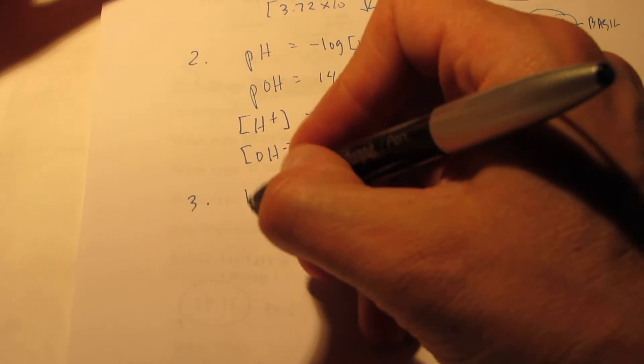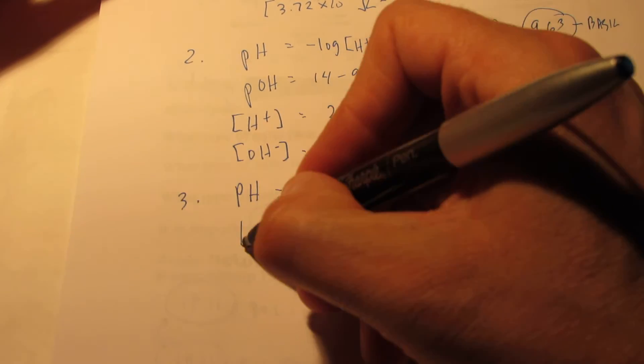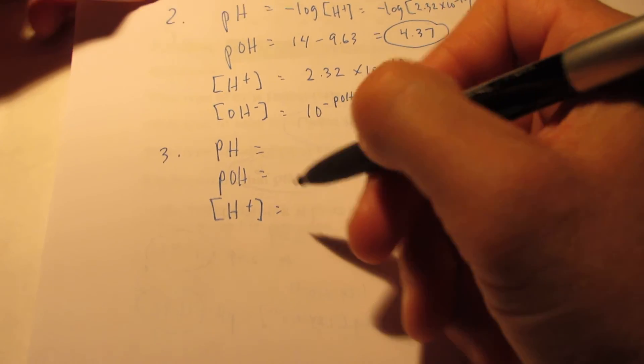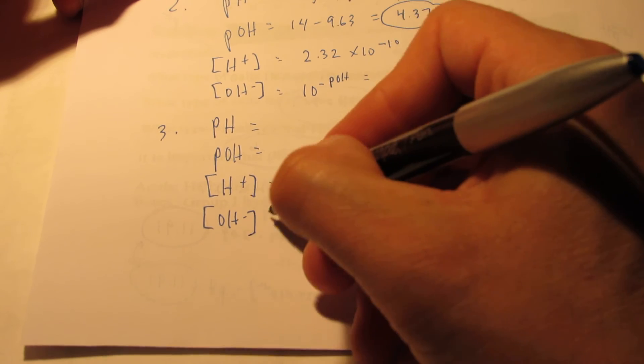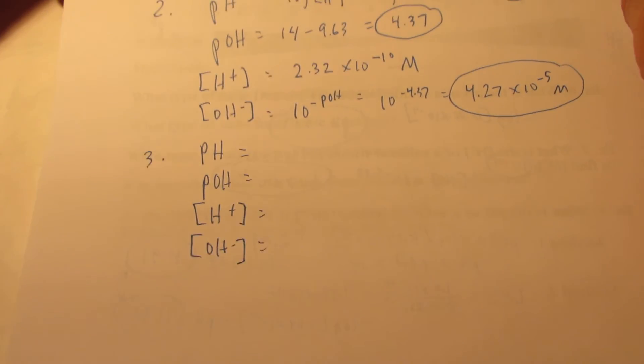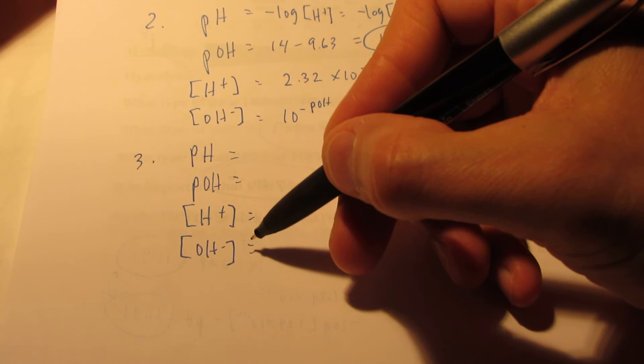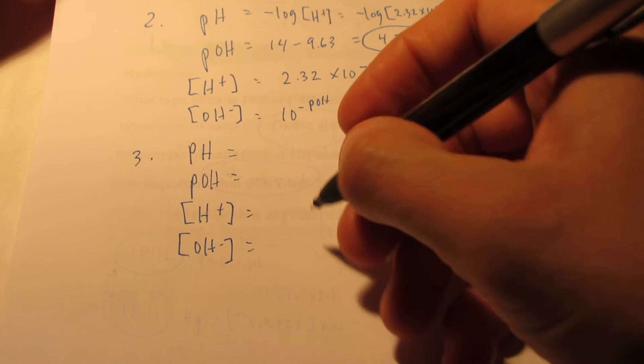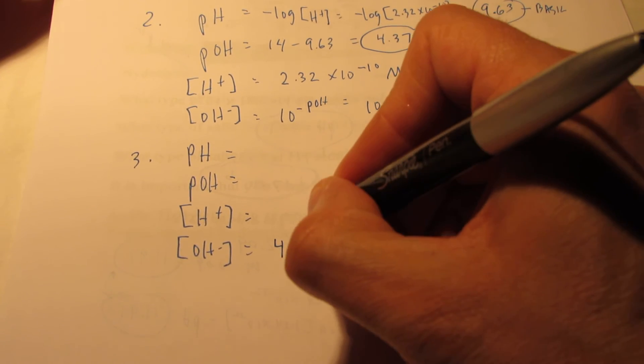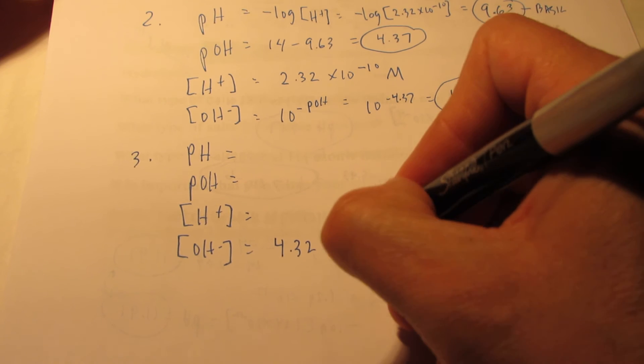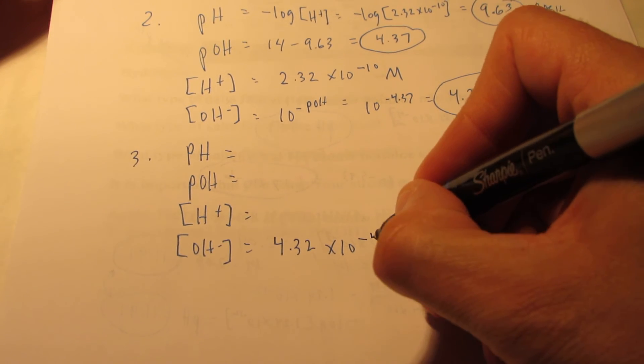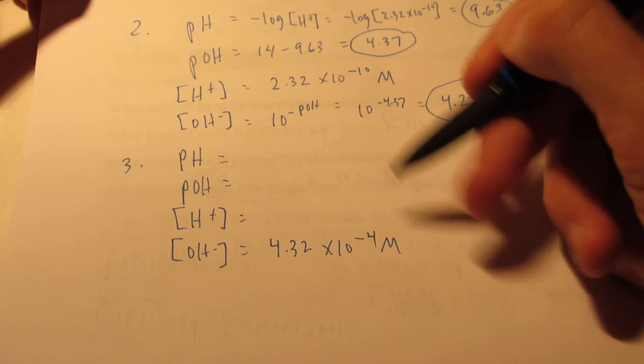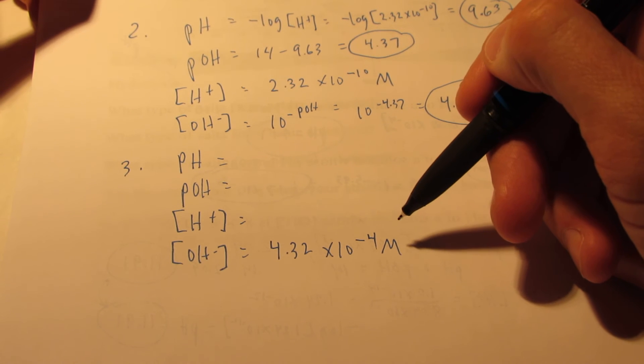Let's see, which one do you want me to give you this time? We did one where I gave you the pH. We don't want to do that again. Oh, I could give you the pOH. We did one with the H plus. And I could give you the OH minus. Let's see how good you are at reading my mind. I'm going to do, well, let's do the hydroxide concentration. Okay? Let's say the hydroxide concentration is 4.32 times 10 to the negative 4th moles per liter.